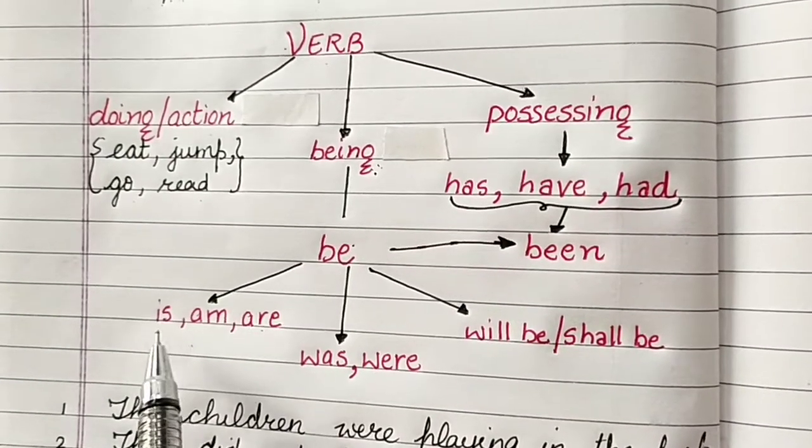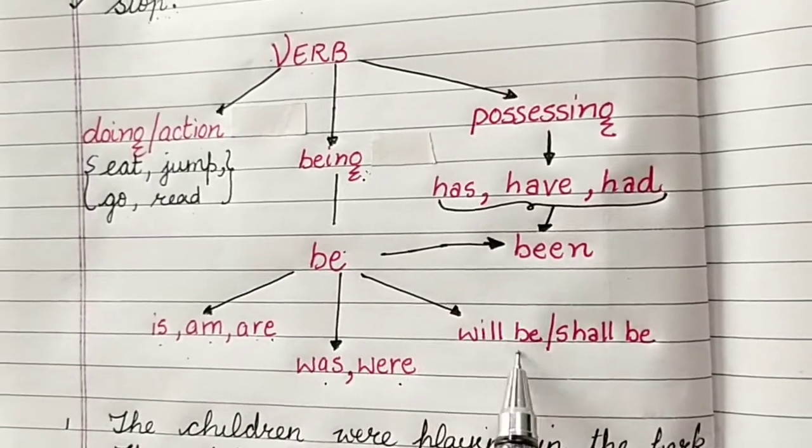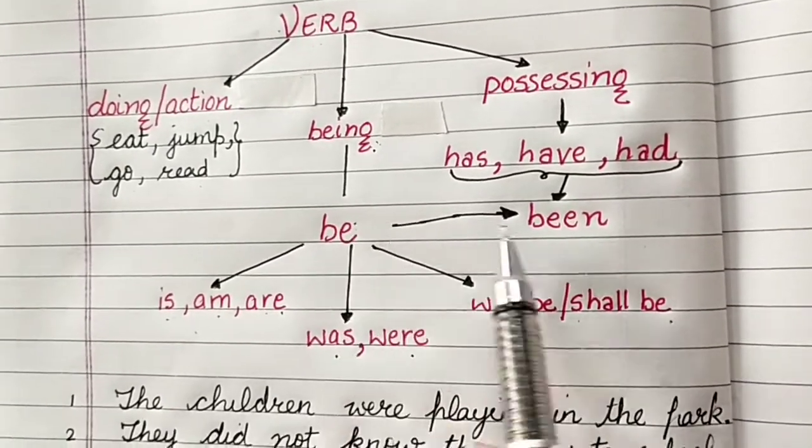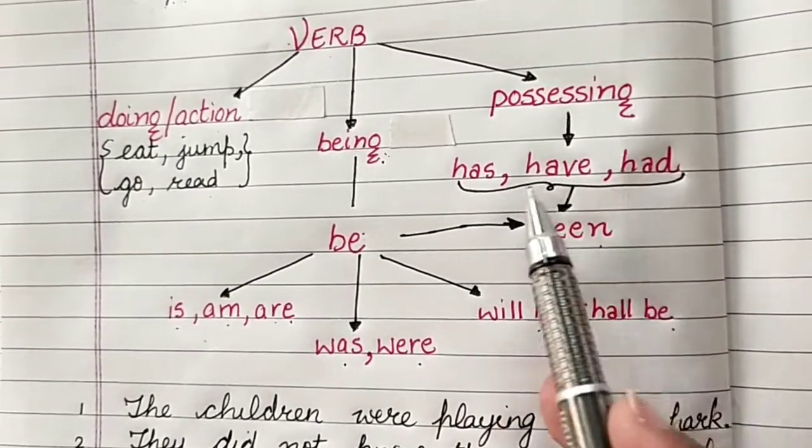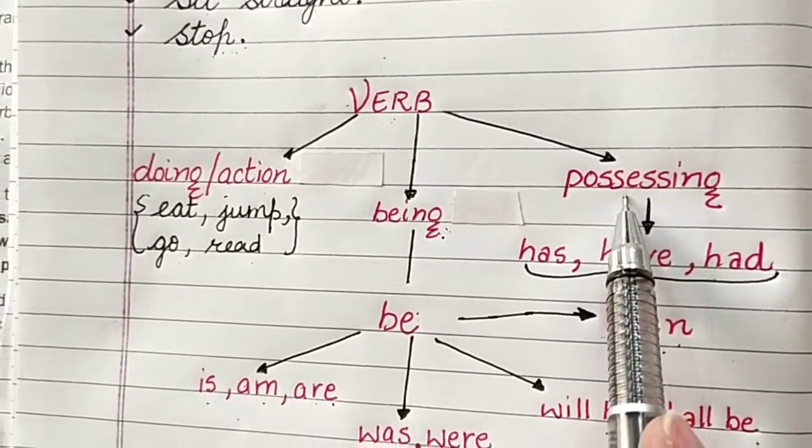In the present form, it is is, am, are. In the past, it is was, were. And in the future, will be, shall be. And it also has a form been which is used with has, have had.